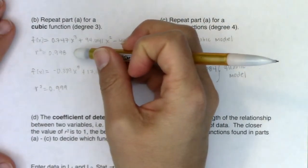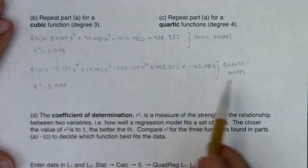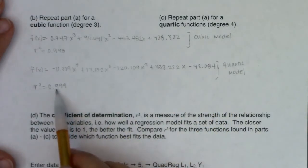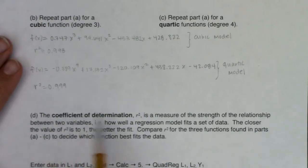Here's the cubic model, 0.998. And here was the quartic, 0.999. You're seeing that the largest R squared was happening on that quartic model. And the closer R squared is to one, the better fit your model. That's one of our main metrics to determine which model is best. We call that the coefficient of determination. It's a measure of the strength of the relationship between the two variables. The closer the value of R squared is to one, the better the fit. So when we compare the R squared models for these three functions found in parts A through C, which model fit best? The quartic model.